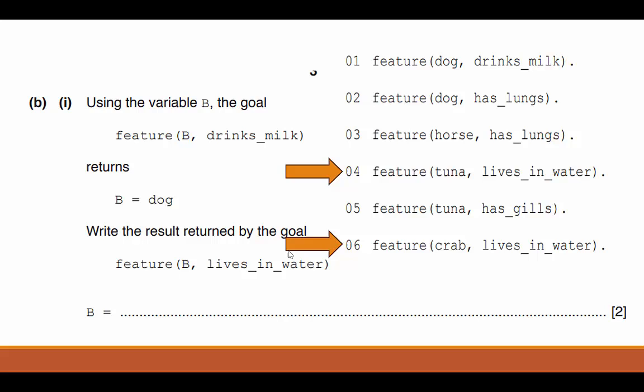How do I show that? I write tuna, I put a comma, and then I write crab. And just like that, I've picked up another two points on my Paper 3 exam.